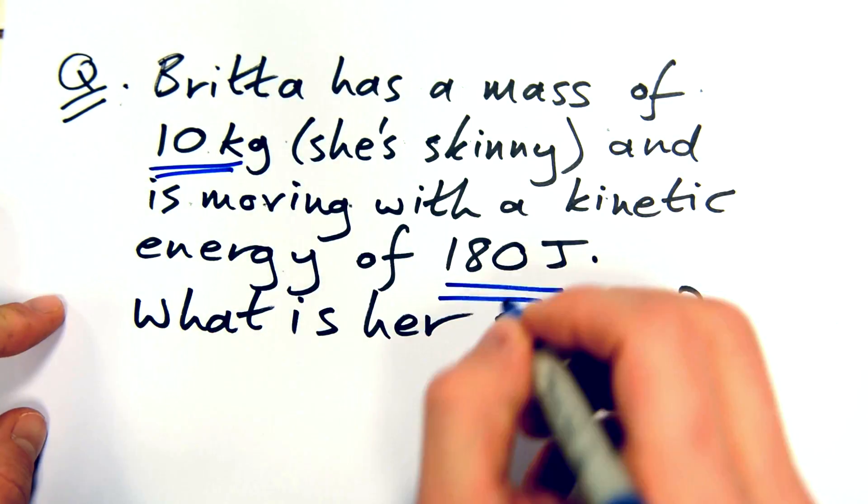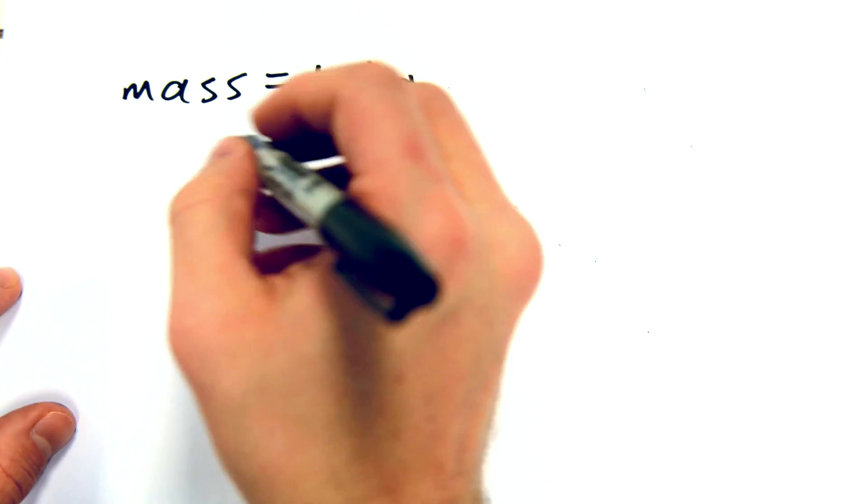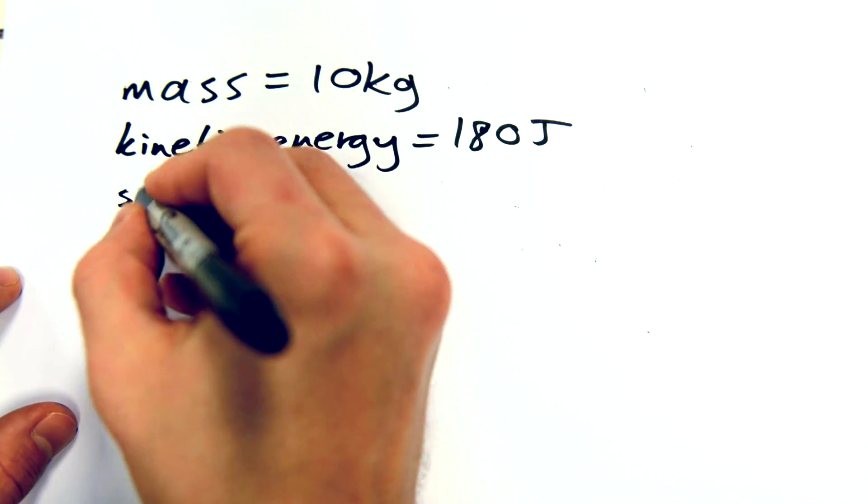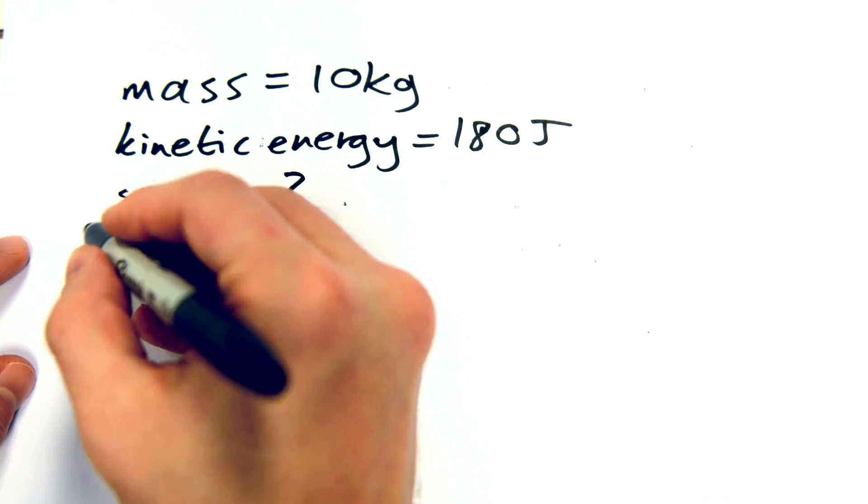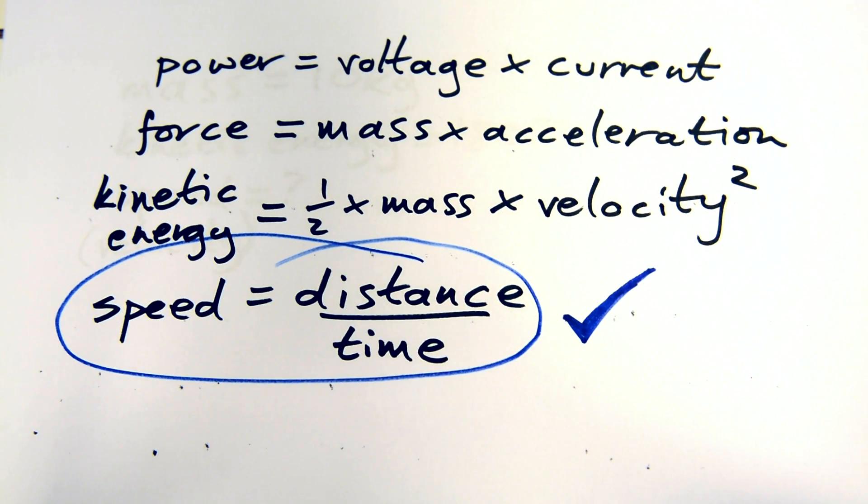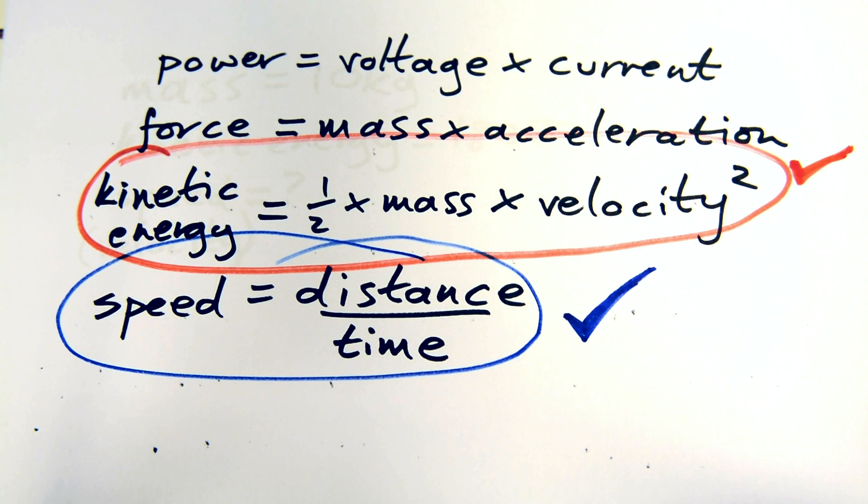Okay, let's write down what we know and what we're trying to find out, which is speed or velocity. We need the equation Ek equals half mv squared, where Ek is kinetic energy, m is mass and v is velocity. Do we need to rearrange it? Well, yes, because we're trying to find speed, velocity, v. So we do need to do that.